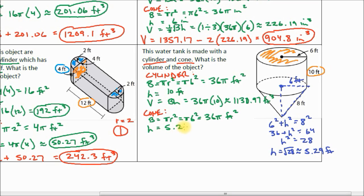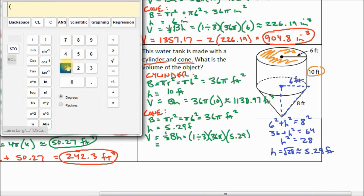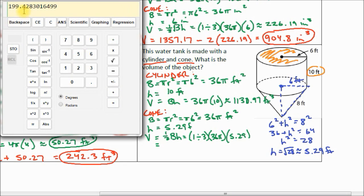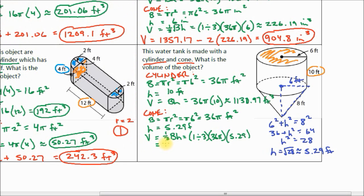Our height is 5.29 feet. The volume of our cone is one-third times the base area times the height: (1/3) × 36π × 5.29, which equals approximately 199.43 feet cubed.